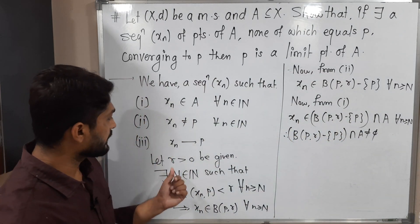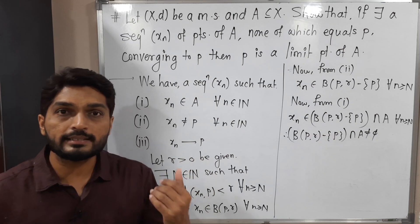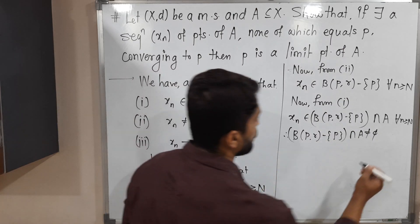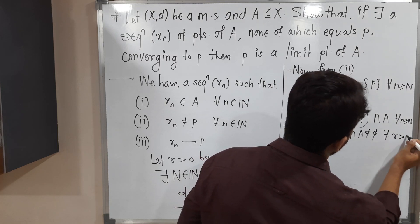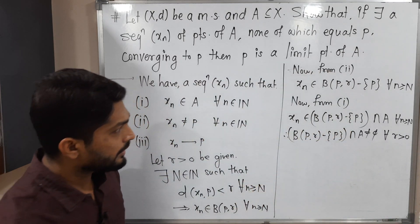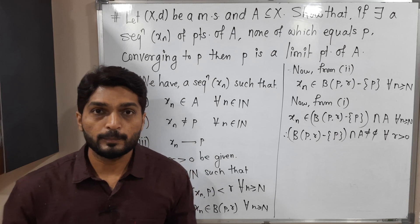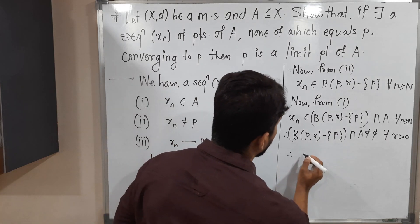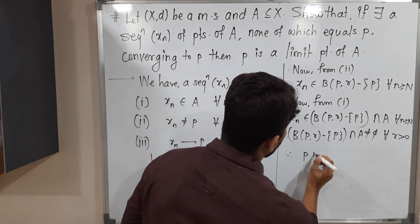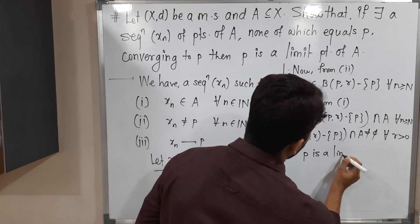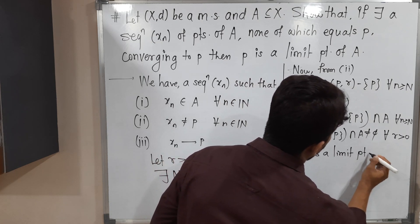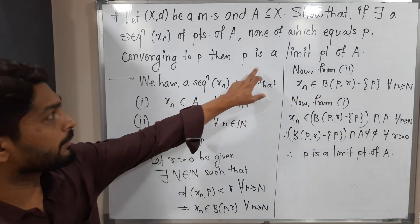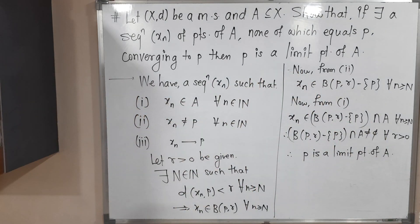We had taken R greater than 0 to be given, that means R is any arbitrary positive number. So it is true for every R greater than 0. This is our definition of a limit point. Therefore, P is a limit point of A. In this way, we proved that point P is a limit point of A.